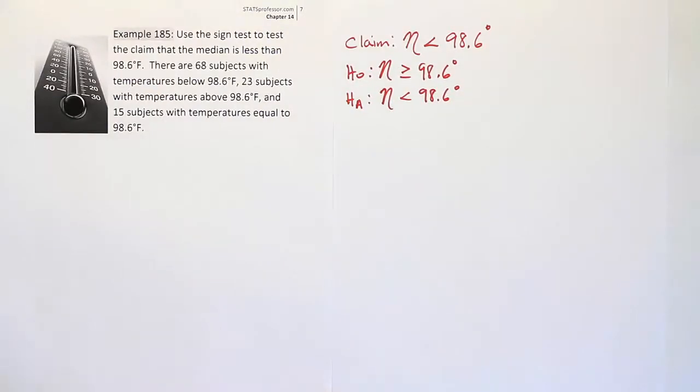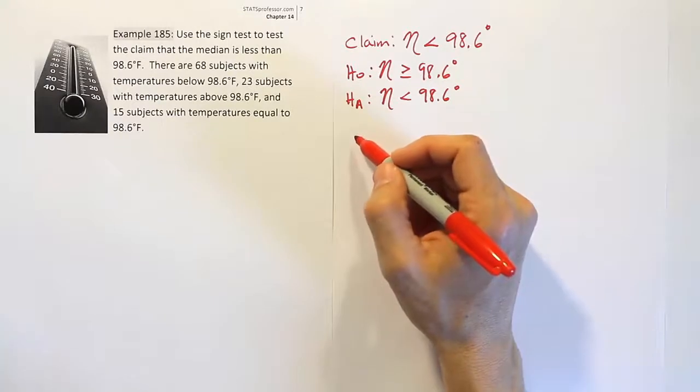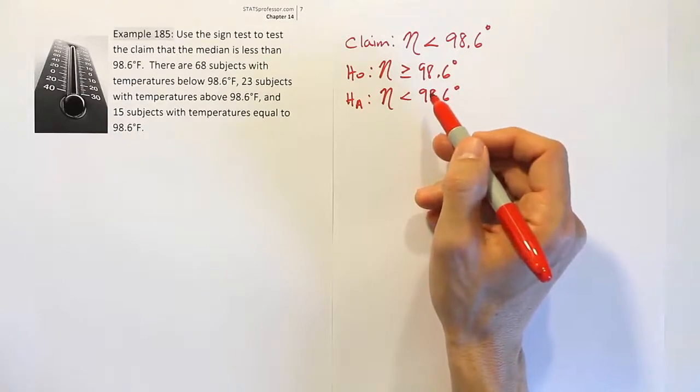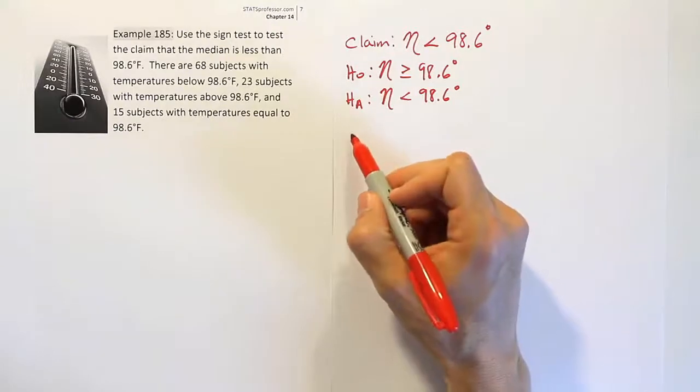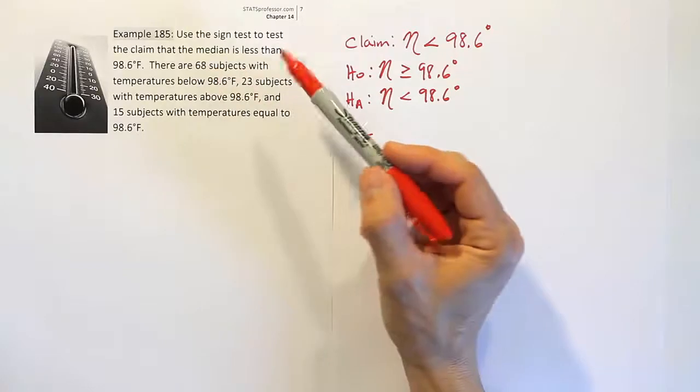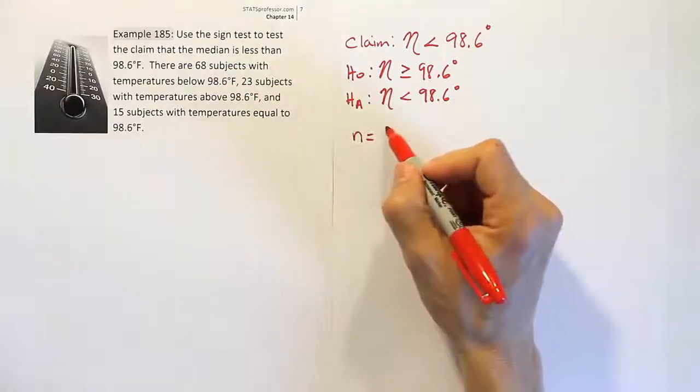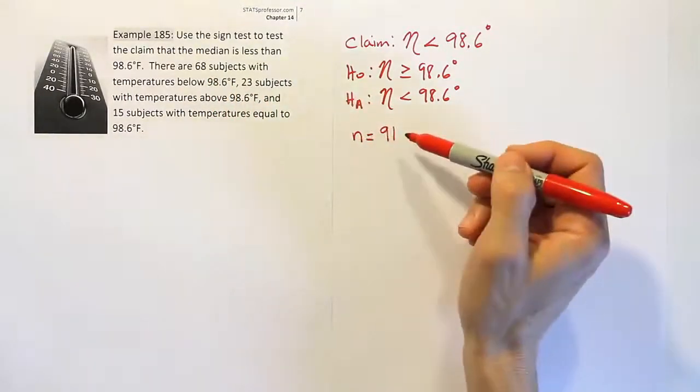Now that you have the claim, H0, and HA, your next step is to work with the data. We need to do two things. We need to throw out any ties. Any body temperature that was equal to 98.6 should be ignored in the problem. We see there were 15 subjects with temperatures equal to 98.6. We're going to discard those. The n for the problem is 68 plus 23, so it's 91 total values. You do not include these 15 subjects because they had a temperature that was tied.